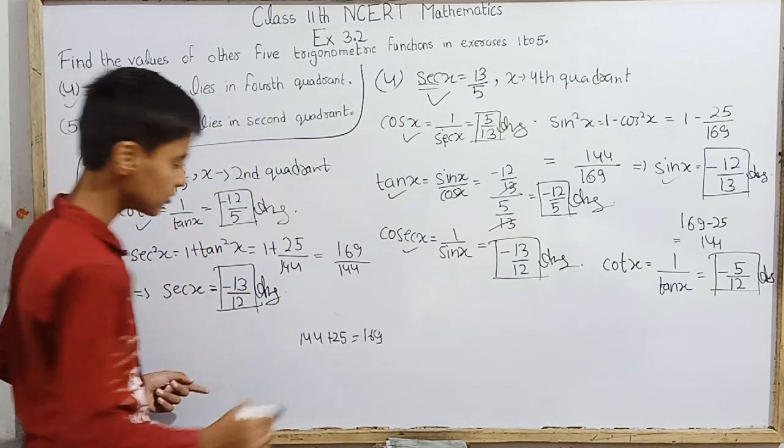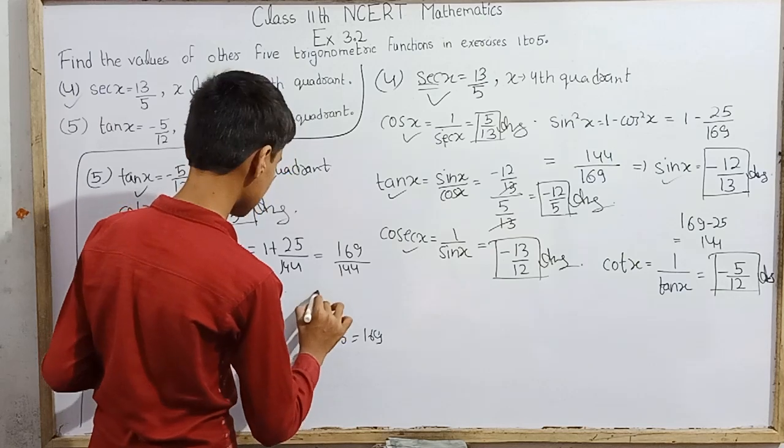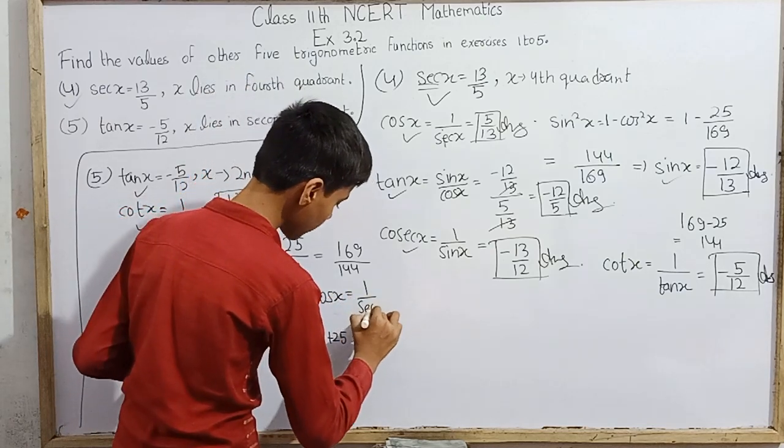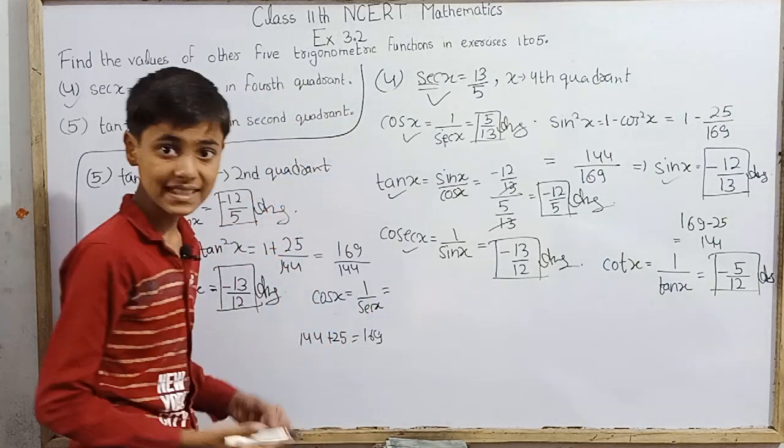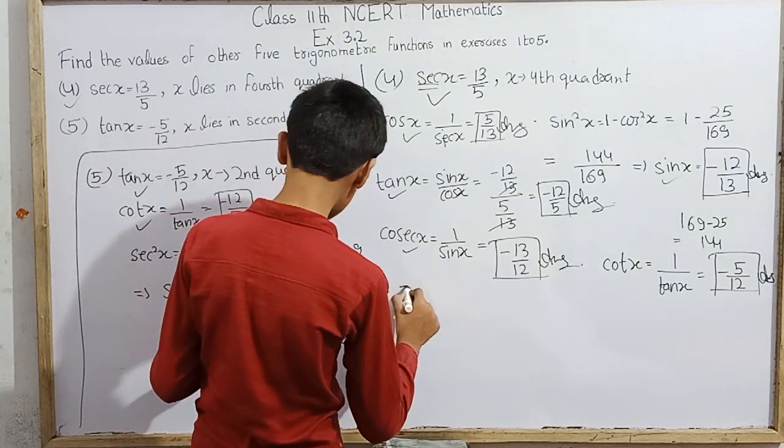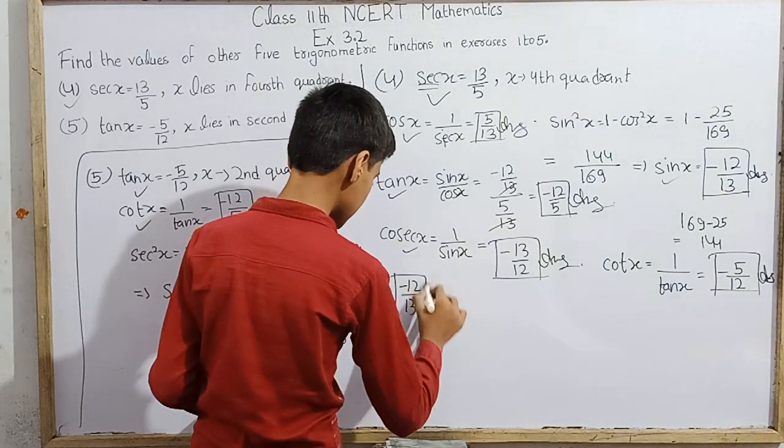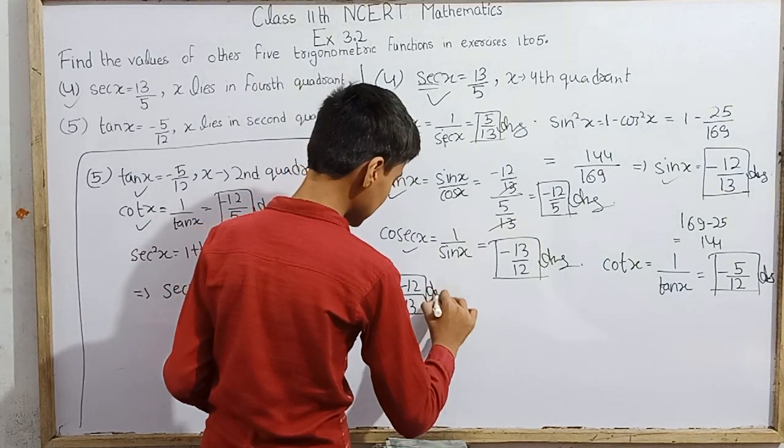Now we will calculate the rest easily. Cos x, which is 1 over sec x, is the reciprocal or multiplicative inverse. So cos x equals minus 12 over 13. We got this.